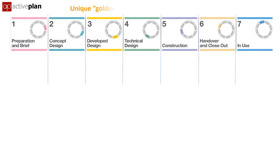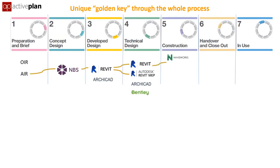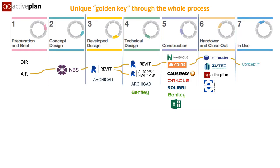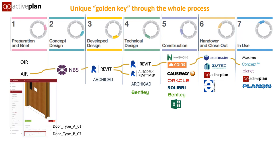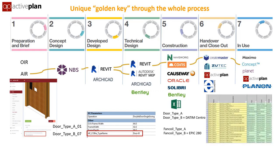The important thing is that we're using the digital information through design, procurement and construction, so it can help generate the digital O&M that can deliver the data required into all of the applications used for operations. The golden key is written into the Revit family so it can automatically connect with real products installed and feed into the asset management systems.